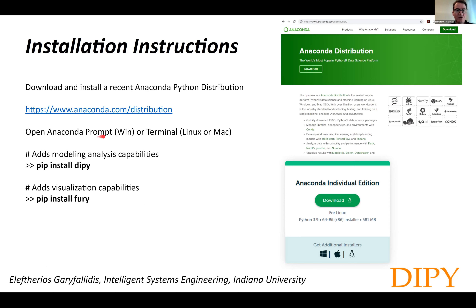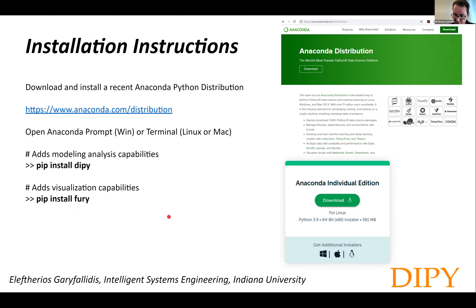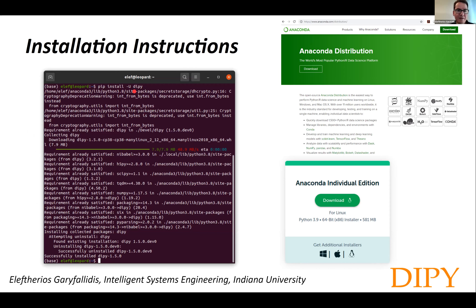If you are on Windows, you open a terminal called Anaconda Prompt that is provided with Anaconda. If you are on Linux or Mac, you open your standard terminal. Then you can run 'pip install dipy', which adds the modeling and analysis capabilities, and then 'pip install fury', which adds the visualization capabilities. That's the installation you need to do — it's very straightforward. If you already have DIPY installed, you just add the capital -U flag and it will upgrade. If you install DIPY correctly, you should see the message: 'Successfully installed dipy 1.5.0'.